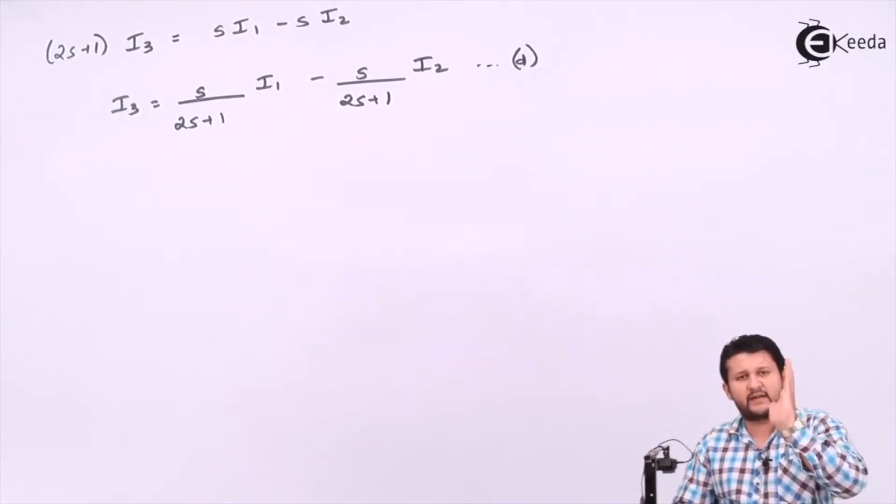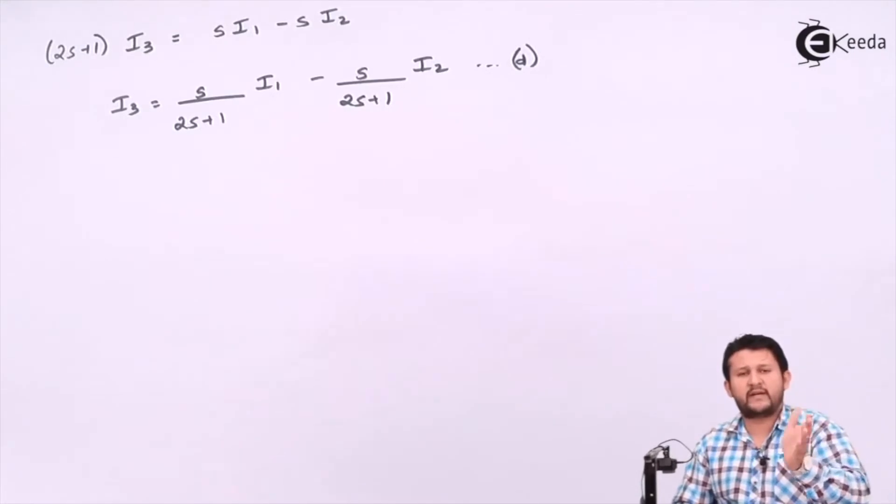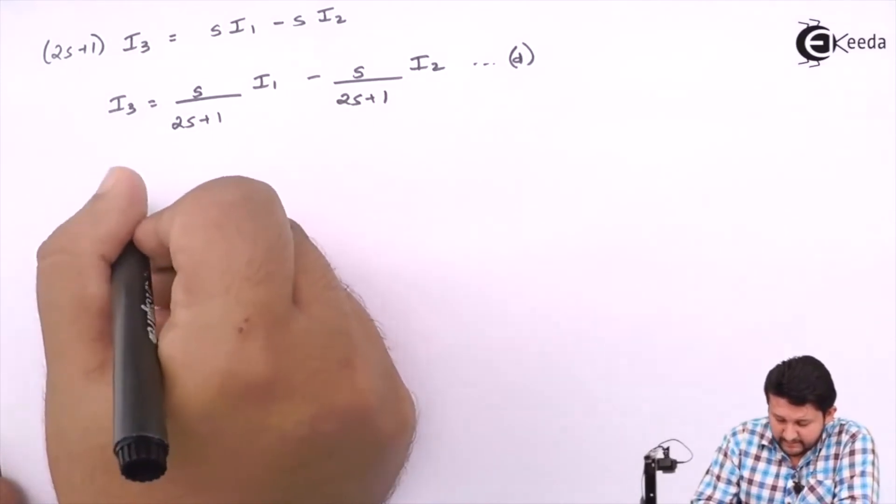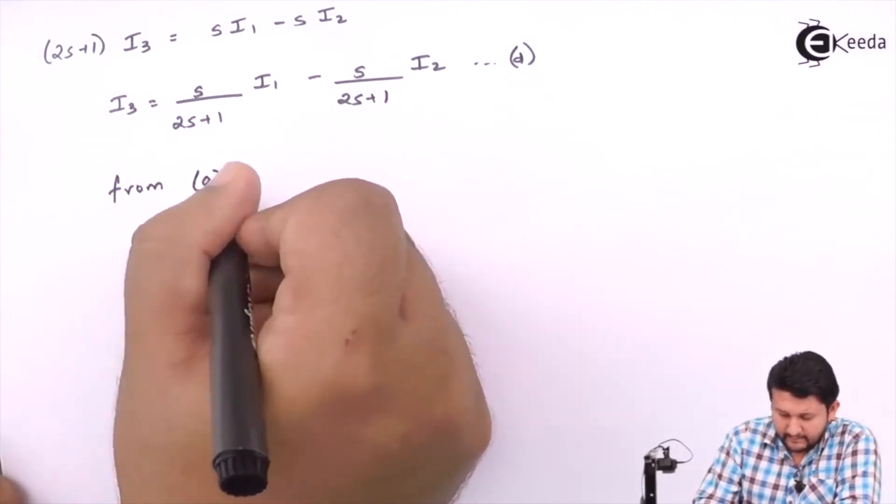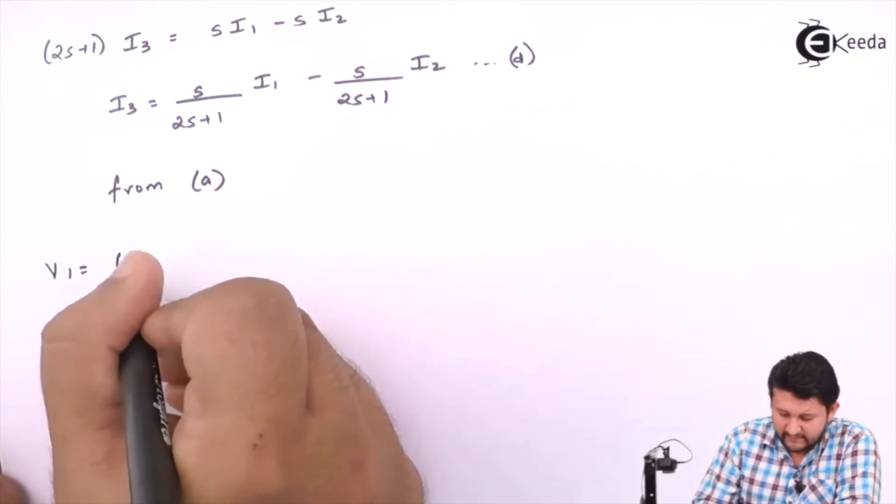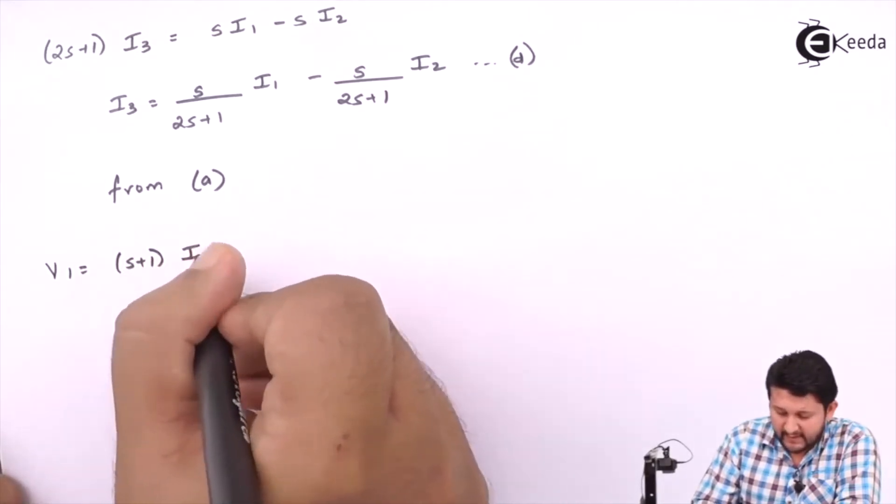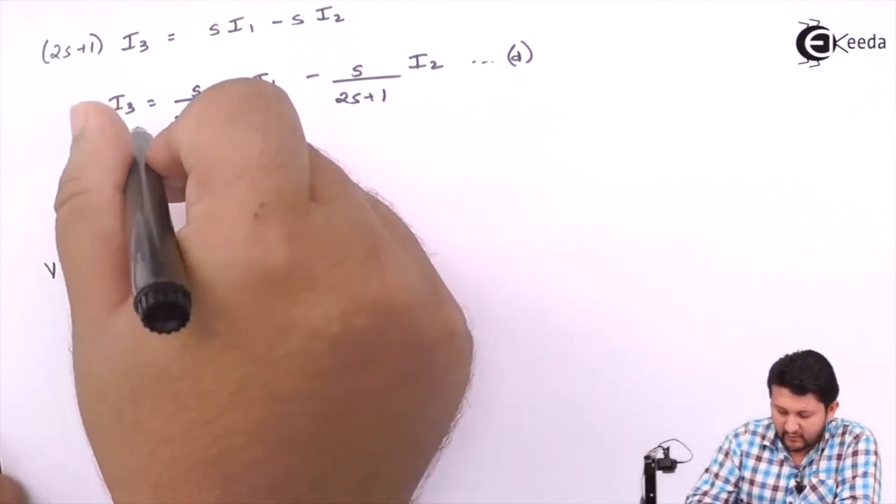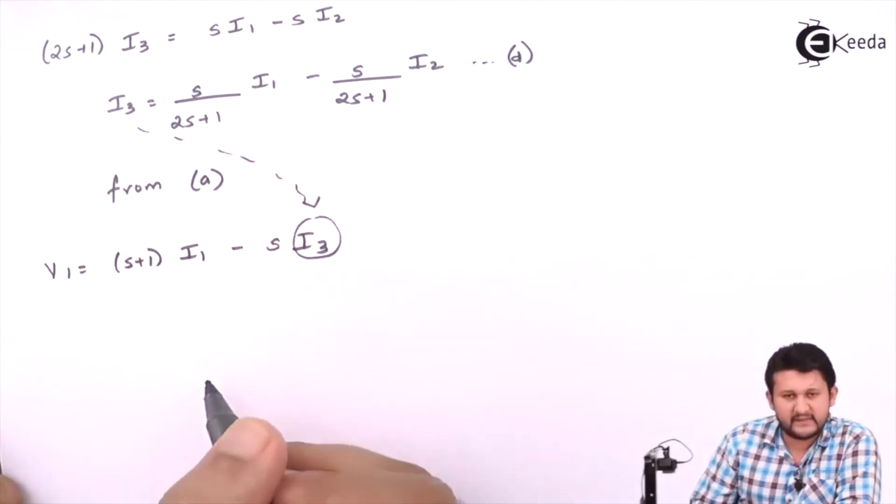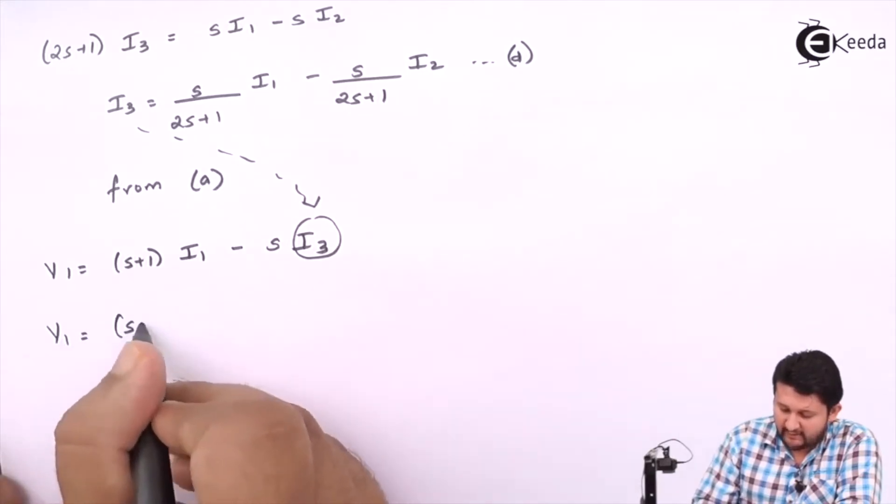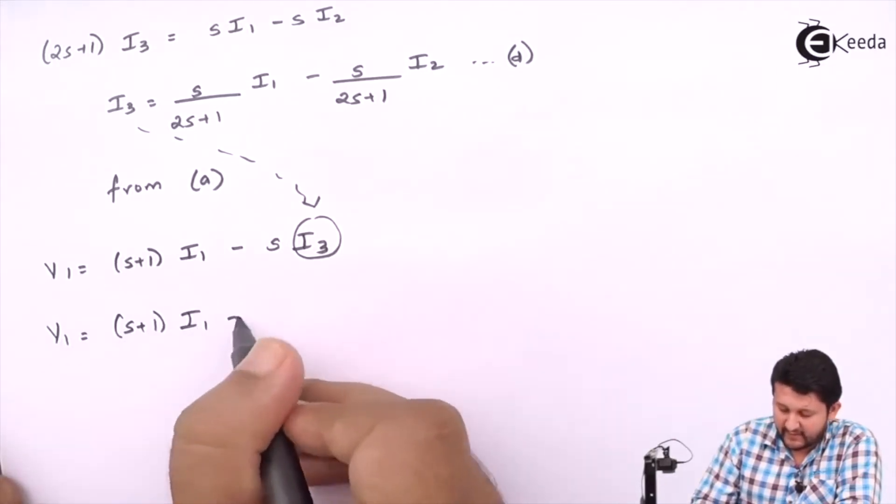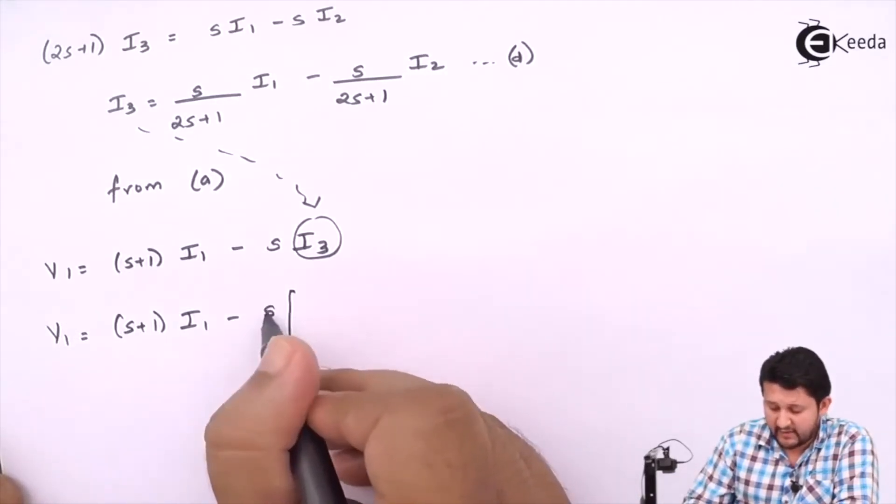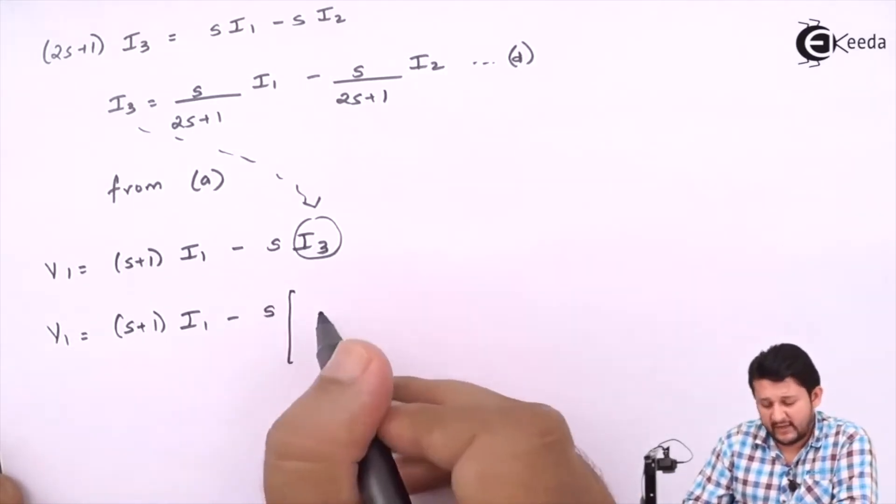So let's put this equation into equations 1 and 2—your A and B—so that we can get V1 in terms of I1, I2 and V2 in terms of I1, I2. So let's have a look. The equation which you got from A was V1 = (s+1)I1 - sI3. So put the value of I3 in both from this equation.